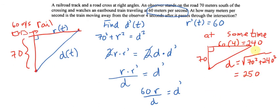So now we can take all this information. We know that r is equal to 240, d is equal to 250. So d' is equal to 60 times r, which we said was 240, divided by 250. And cancel that, cancel this. That's 5, that's 12. 12 times 24 over 5.